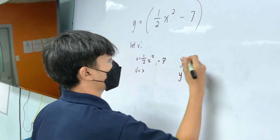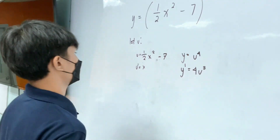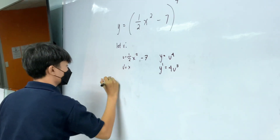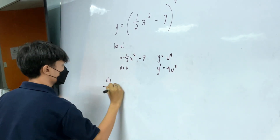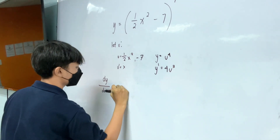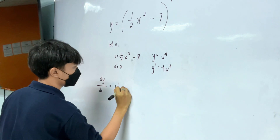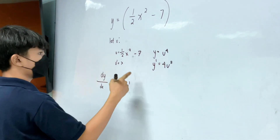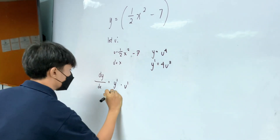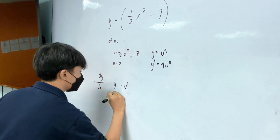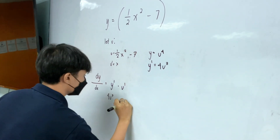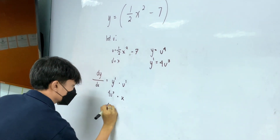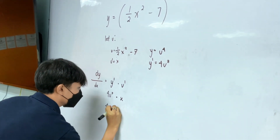Pabawasan natin, for u. Ang next element is dy over dx is equal to the derivative of y times the derivative of u. So, ang derivative of y natin is 4u³. Ang magiging sagot is 4x times u³.